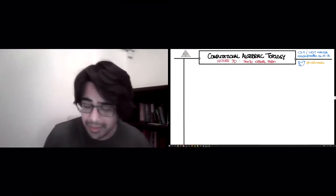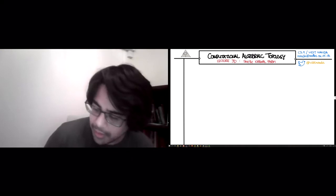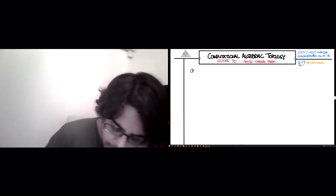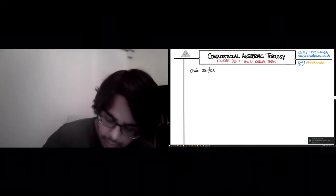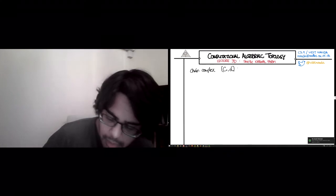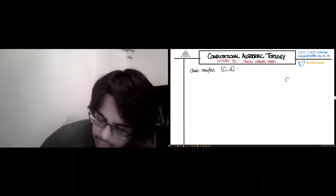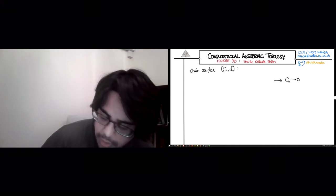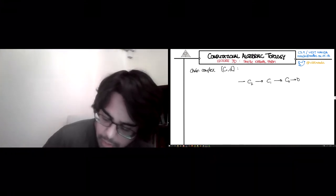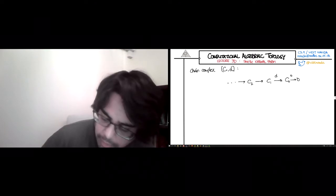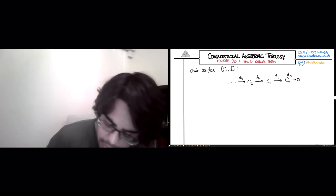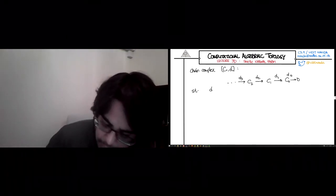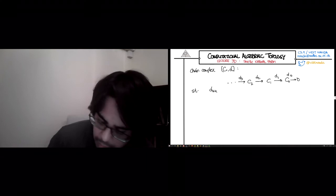At the end of our previous lecture, we had left off with the following cliffhanger. You have a chain complex of the form C, D, which means you have C0, which is a chain group in dimension 0, C1, C2, and there's a zero map, I'll just call it d0, and then d1, d2, d3, with the property that dk+1 followed by dk equals 0 for all k.